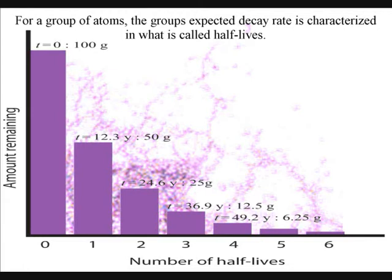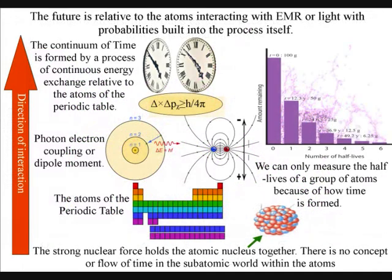It is impossible to predict when a particular atom will decay regardless of how long the atom has existed. However, for a group of atoms, the group expected decay rate is characterized in what is called half-lives. The half-life represents a time after which half of the group's nuclei will have decayed. Mainstream physics has no objective or logical understanding of why we should have such a property as half-life when we are dealing with decaying atoms. But if time and the future itself is relative to the atoms interacting with electromagnetic radiation or light, it would be logical that probabilities are built into the process itself. Therefore, we can't predict the decay of an individual atom and only measure the half-life of a group of atoms.